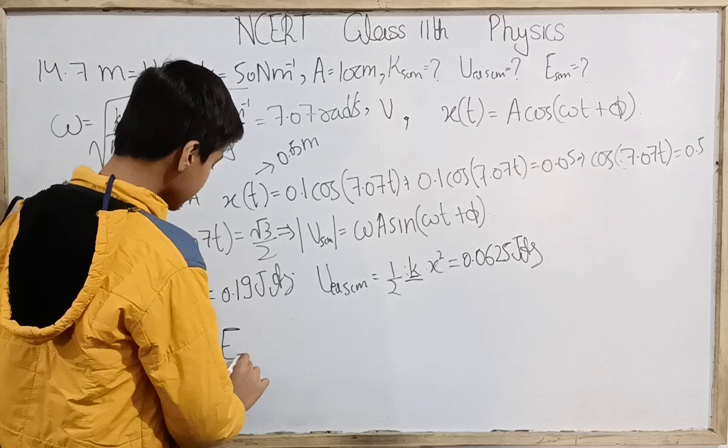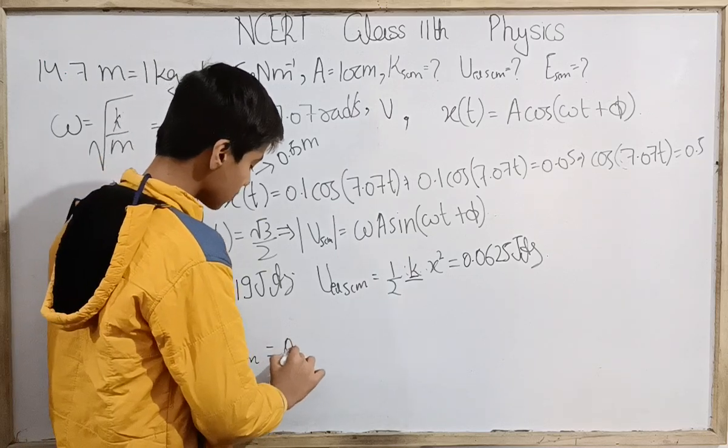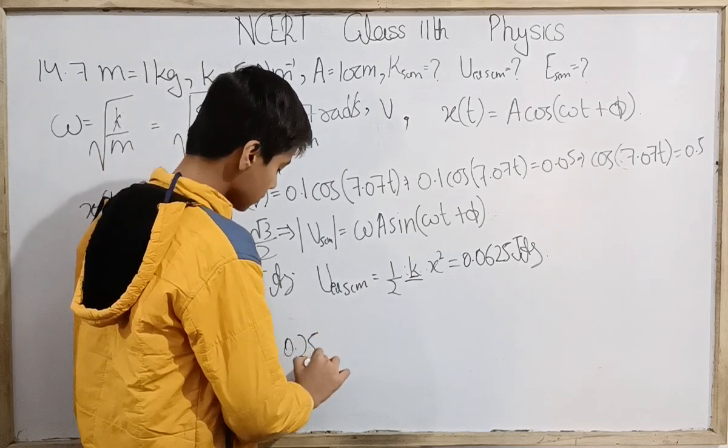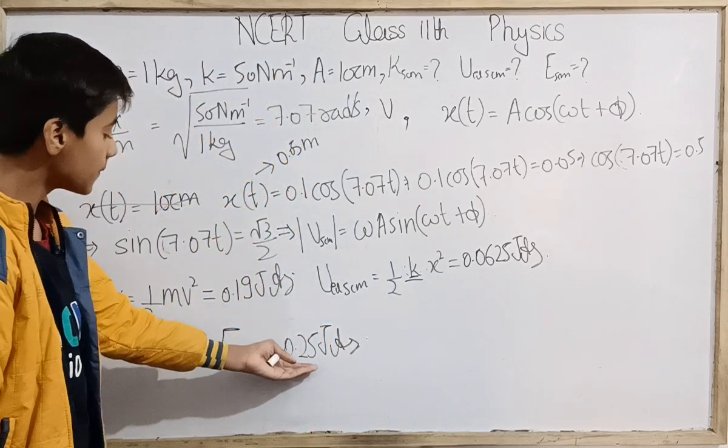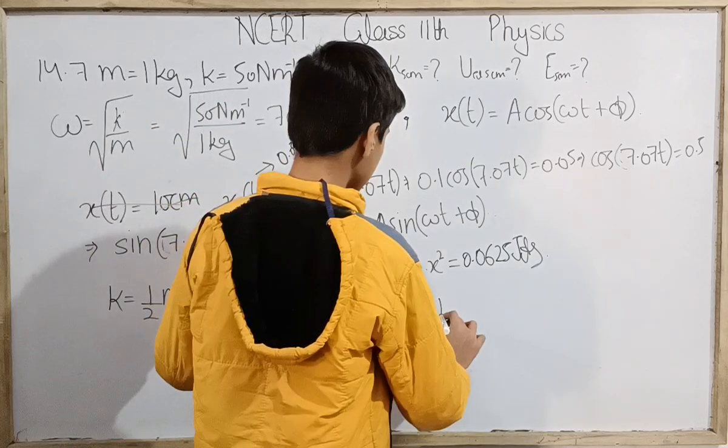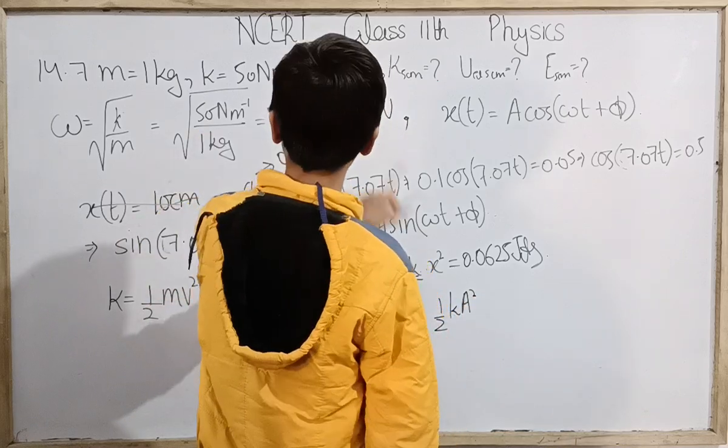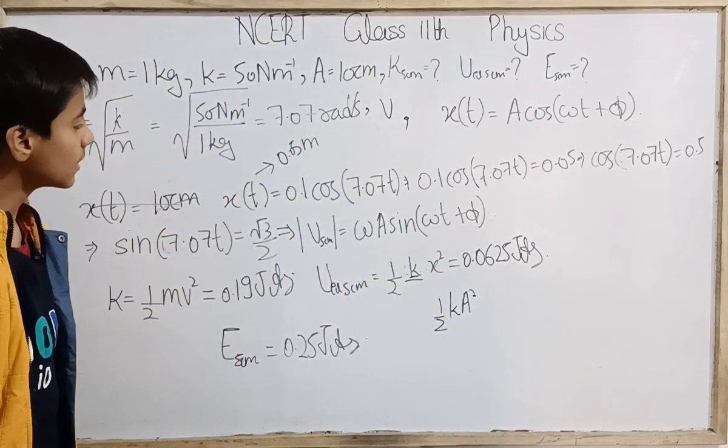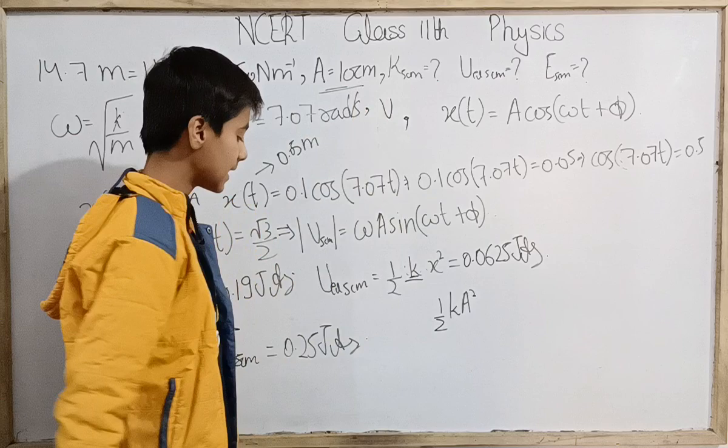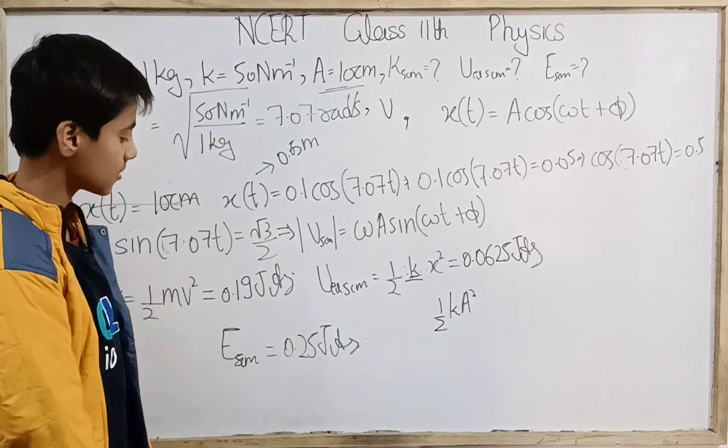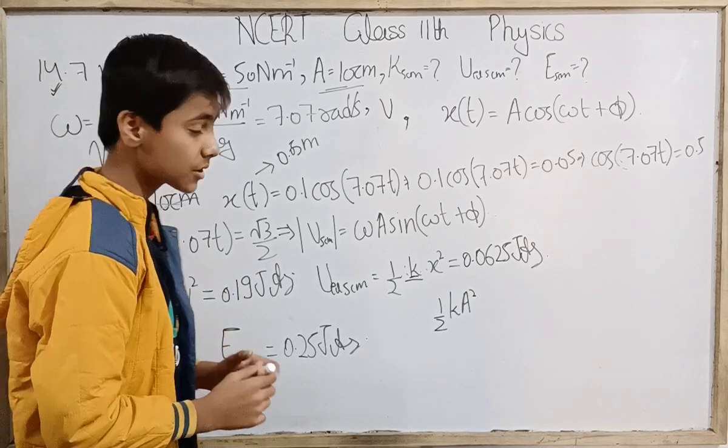Total mechanical energy throughout the motion remains constant. It's the sum of these two. That is approximately 0.25 joules. That is half kA squared. Or if you want to calculate potential energy like this also, you can try half kA squared. So you can put half into 50, that is 25 into 0.1 squared. So 25 into 0.01 equals 0.25 joules. So problem 14.7 is solved.